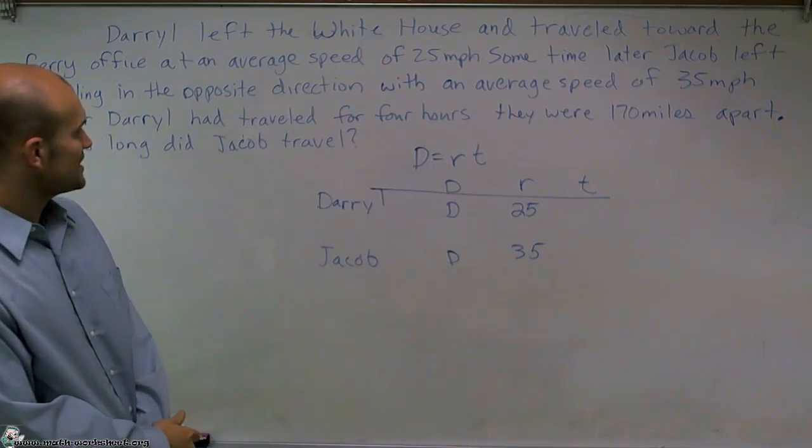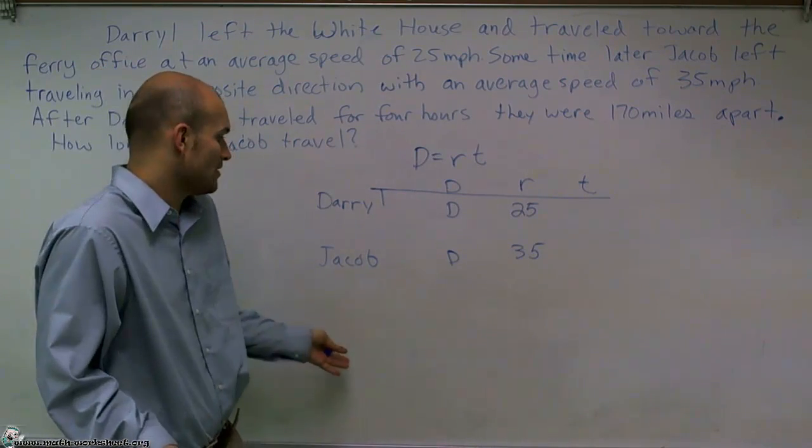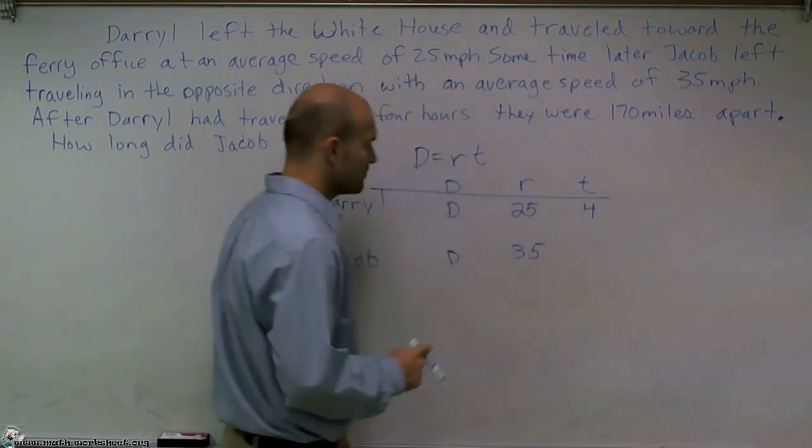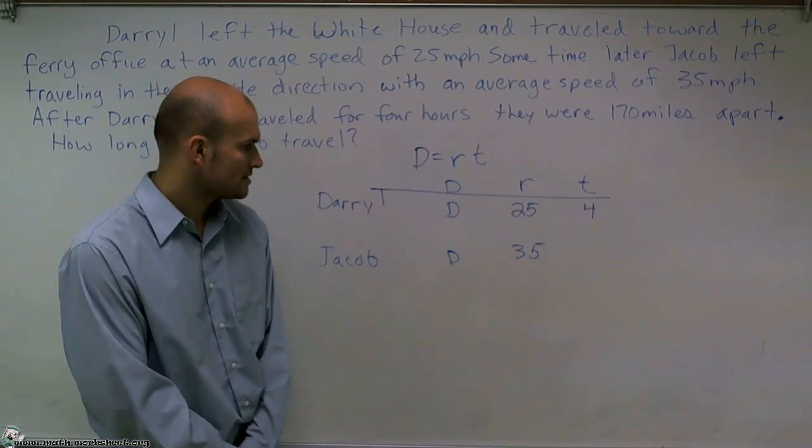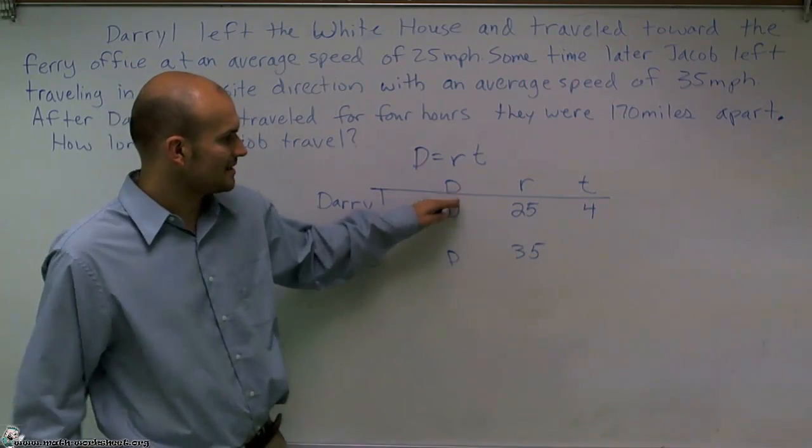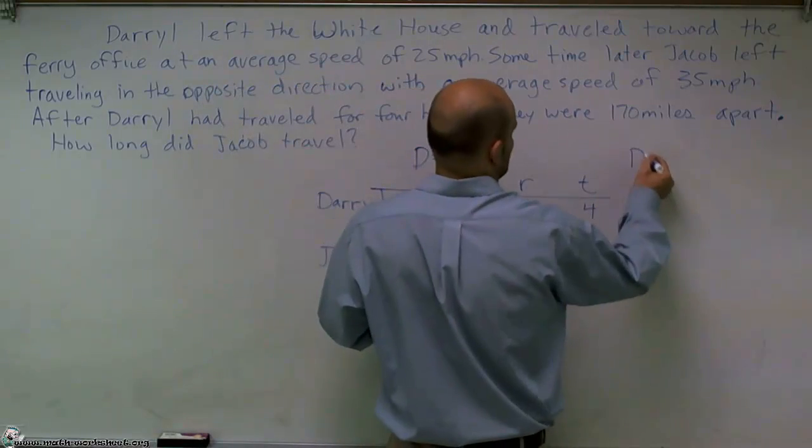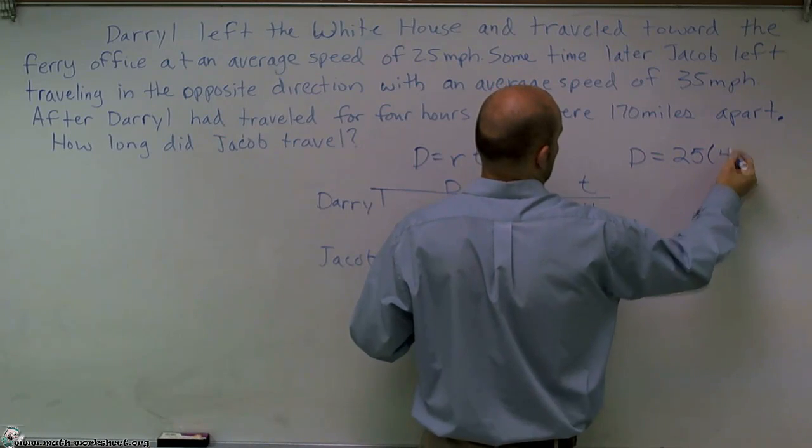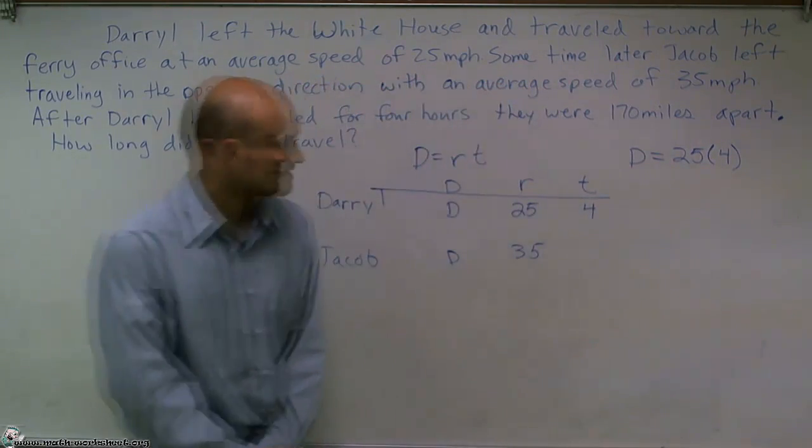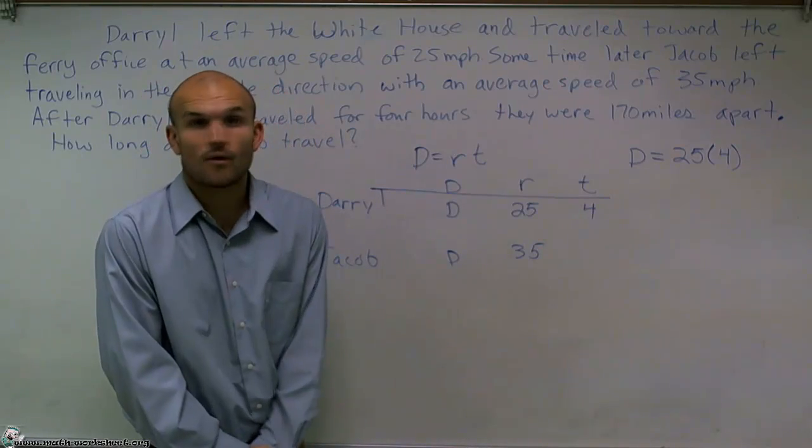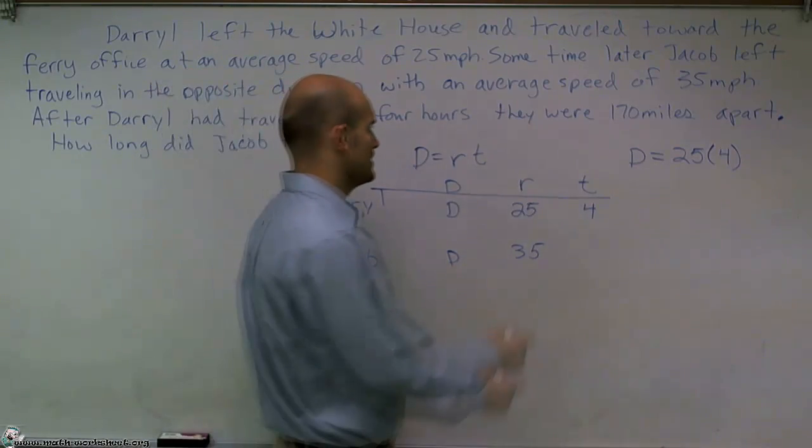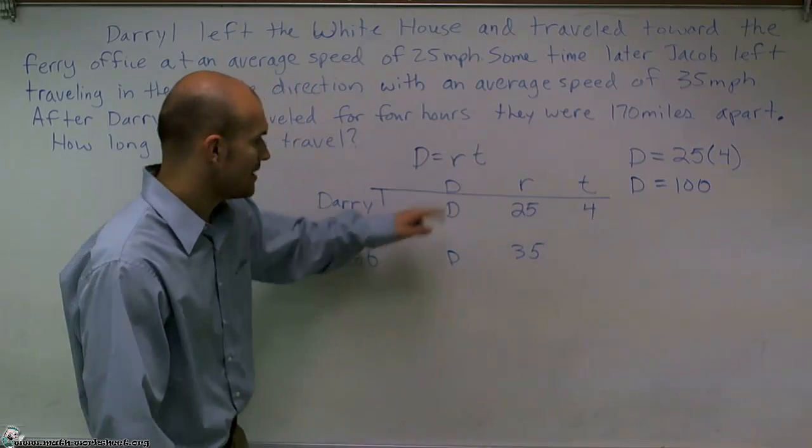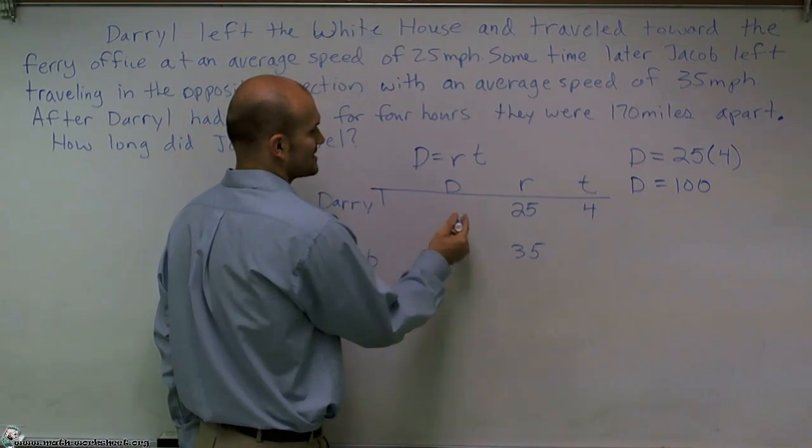Now it says after Daryl traveled for four hours, they were 170 miles apart. So we don't know how far Jacob traveled. So what I can do is automatically for Daryl, I have an equation. I have distance equals rate times time, where my rate is 25 miles per hour and four is my time for four hours. So I can multiply there and I can say in four hours, Daryl traveled 100 miles. So now I know that Daryl's D is going to equal 100 miles.